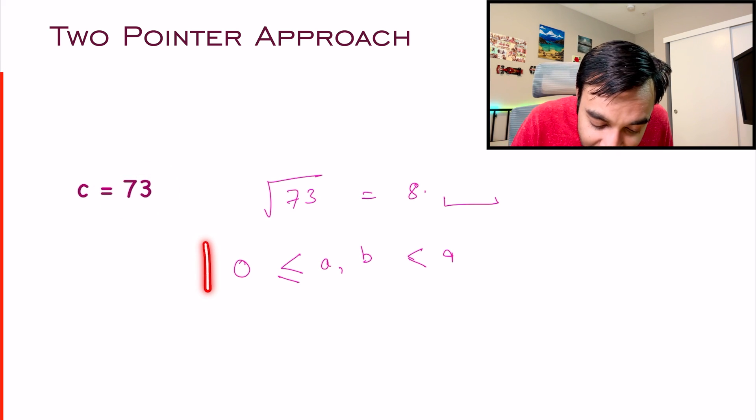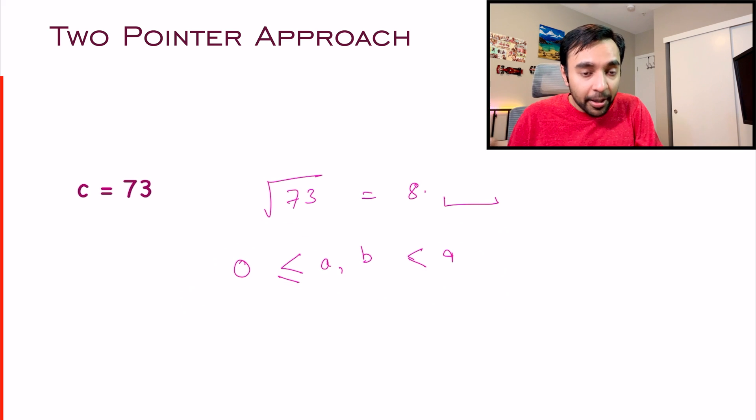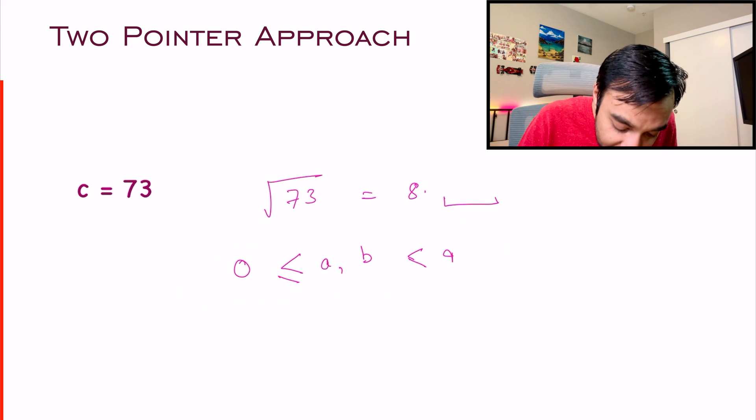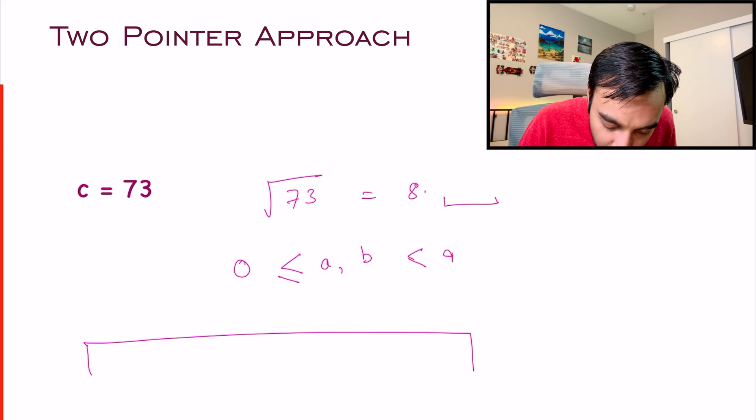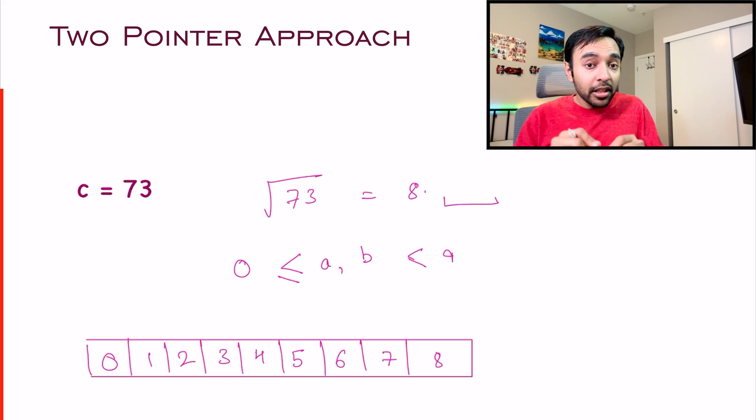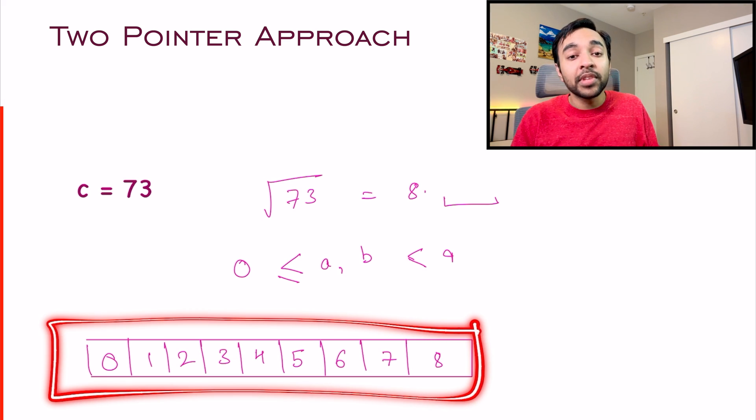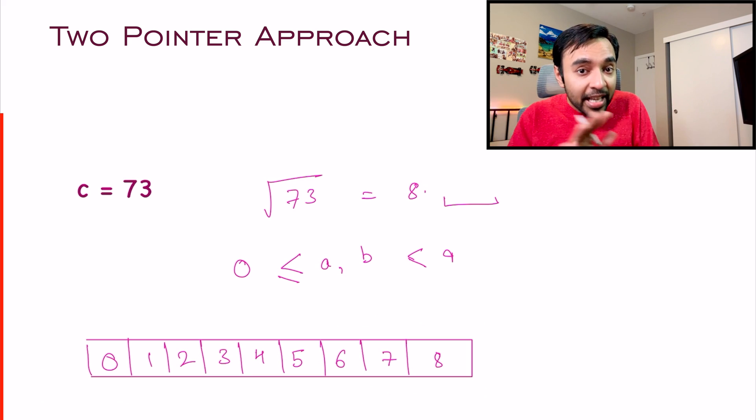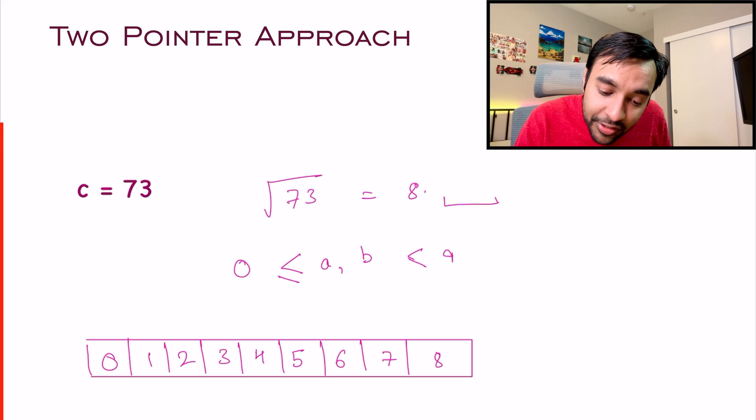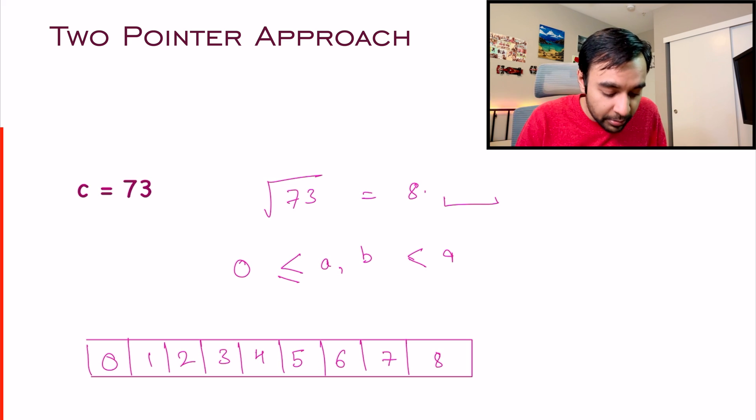So I can safely say that both of these two numbers, A and B, they will be greater than or equal to 0 and less than 9. Because only then, when I will add and square them both, then I will get this number 73. So this is how you get your array. What it basically means is, I have this array in front of me. And the two integers, when squared and added up, they will give you 73, will exist in this particular array. If you cannot find them in this array, then those numbers do not exist. And this is where the two-pointer approach comes in.